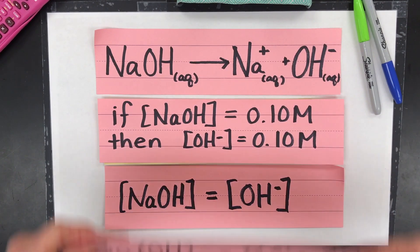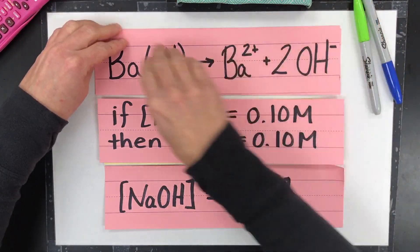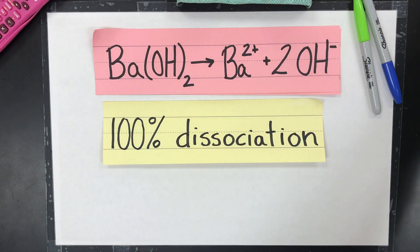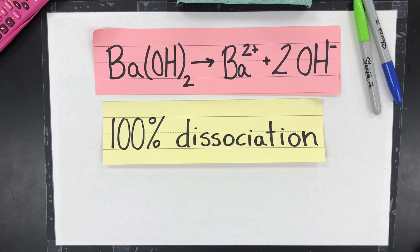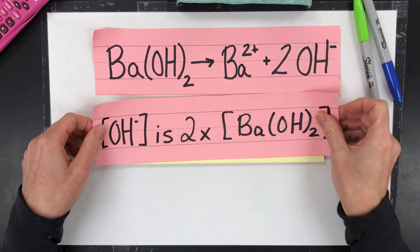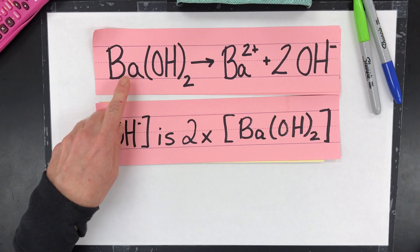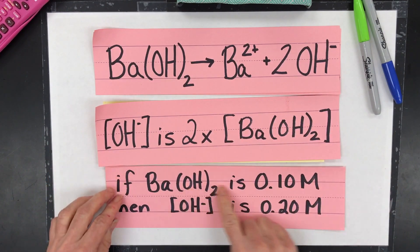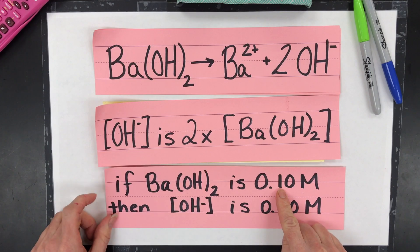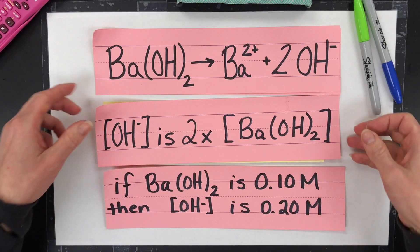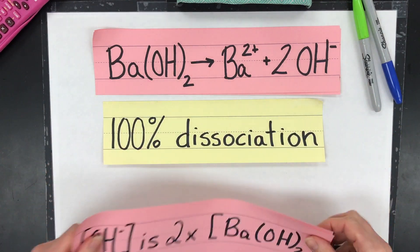Now, be careful. What if you have one of those alkaline earth metals like barium? It's still going to dissociate completely, but this is the thing that's tricky, is the hydroxide ion concentration is going to be double the barium hydroxide. So if you had barium hydroxide at 0.1 molar or molarity, then the hydroxide would actually be 0.2. Keep that in mind when you use those because that's going to change the math.